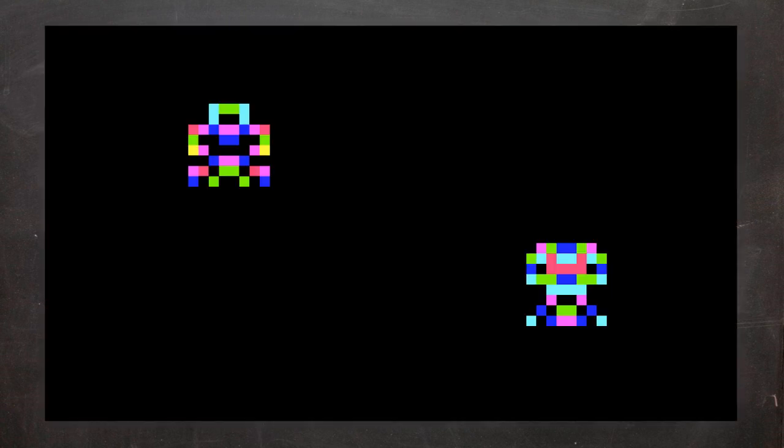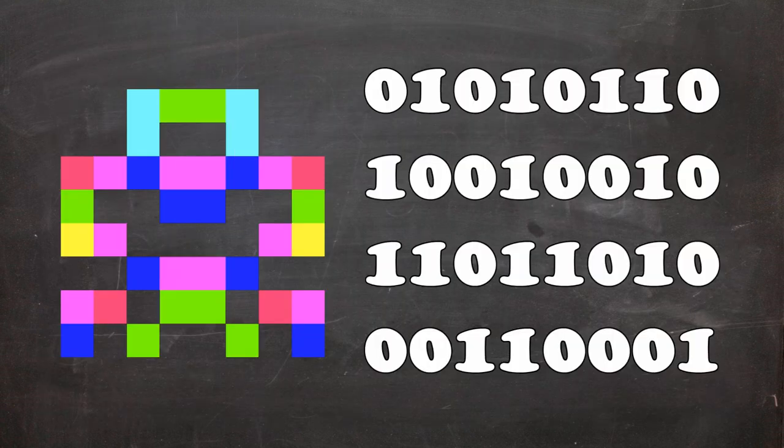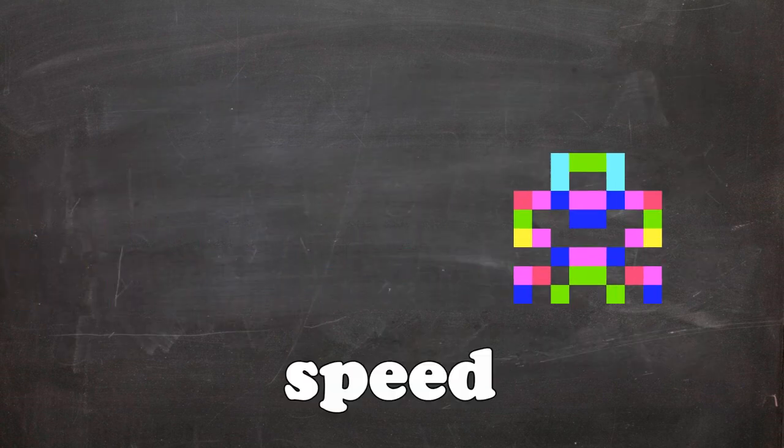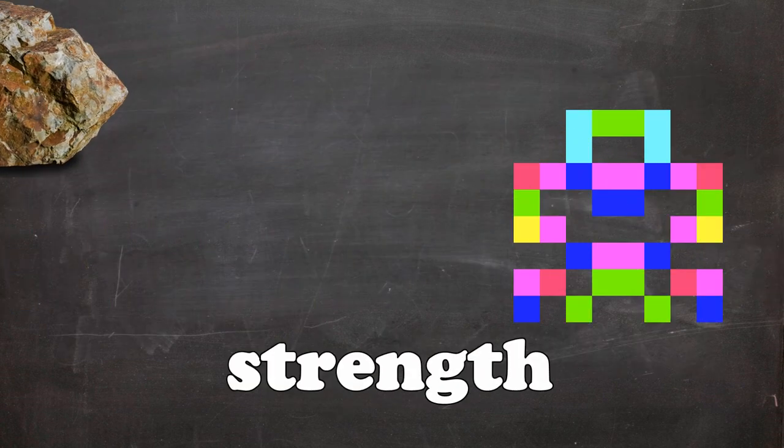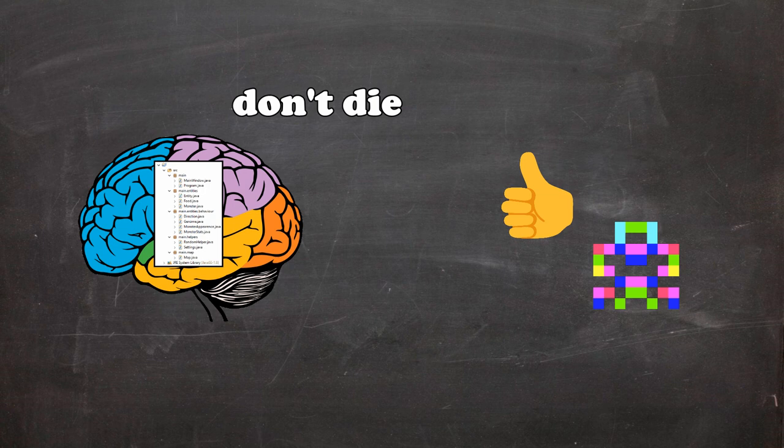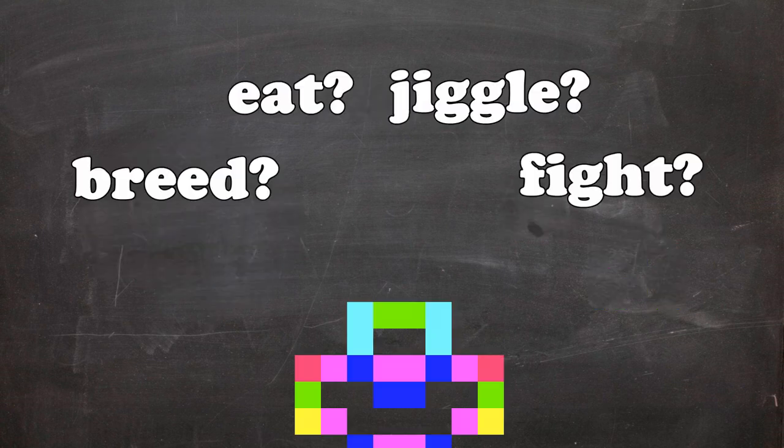Keith spawns just two critters on the screen. Each critter spawns with its own little strand of DNA. And this DNA controls how fast it is, how much health it has, and how hard it hits. It also controls its priorities, whether it should breed, fight, or eat, or just wander around.